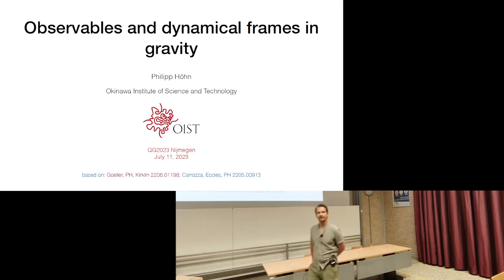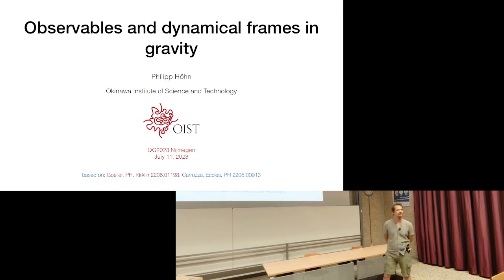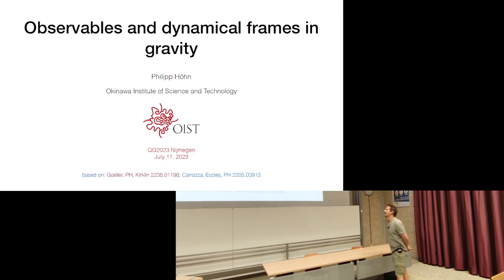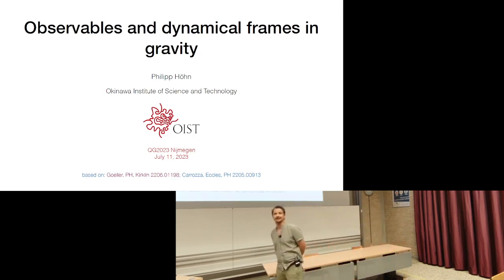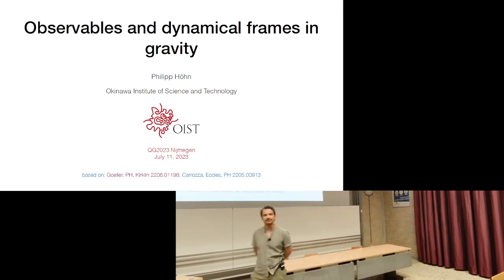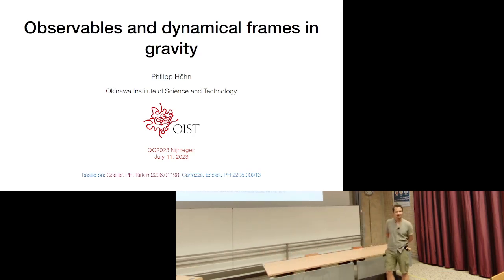Thanks very much, and thanks to the organizers for having me here. I want to talk about how the concept of dynamical frames, which has seen a lot of attention in recent years in the context of quantum reference frames, can help in the construction and interpretation of observables in gravity, and in particular how it can help to unify different approaches to gravitational observables. The talk will be mostly based on a paper from last year, and I'll try to focus on some aspects I didn't speak about before.